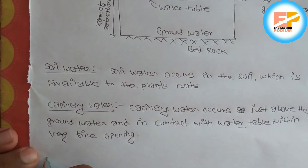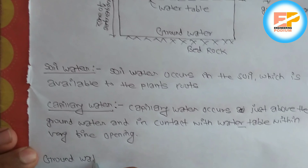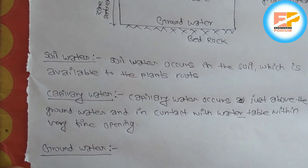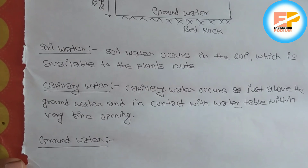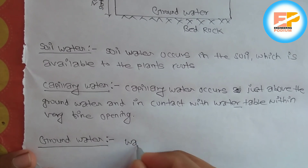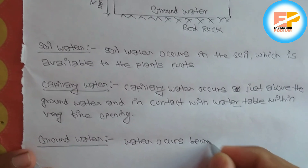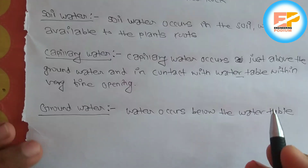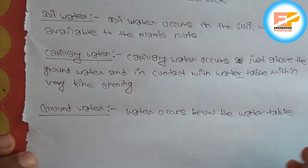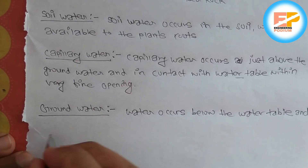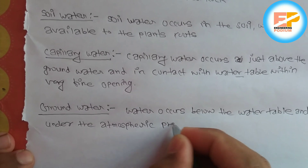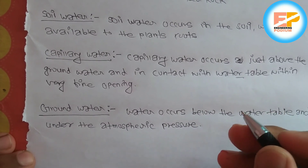Moving on to the next — that is groundwater. Groundwater occurs below the water table and under atmospheric pressure. As you can see in the figure, below the water table groundwater is there. It can move upward or downward within an aquifer.